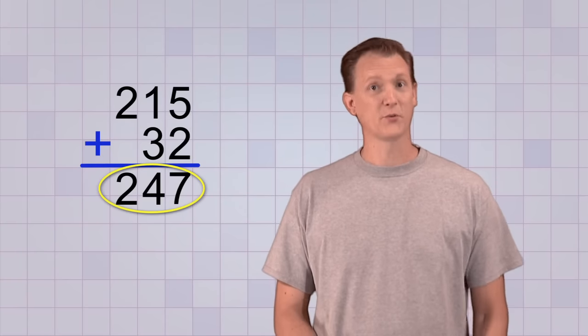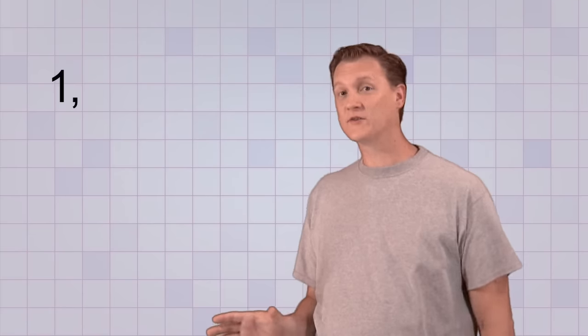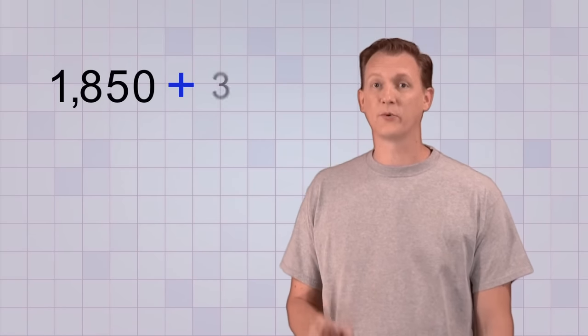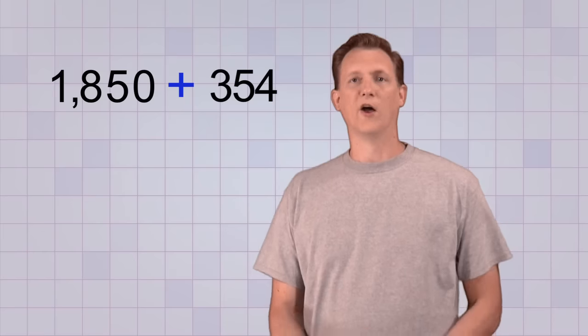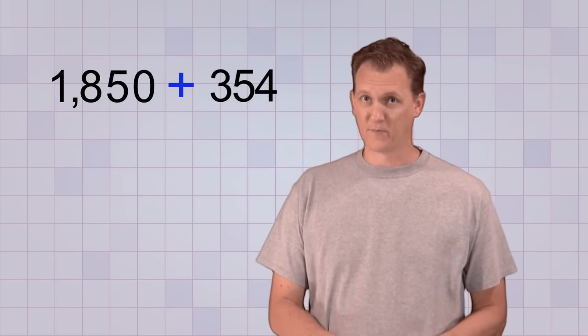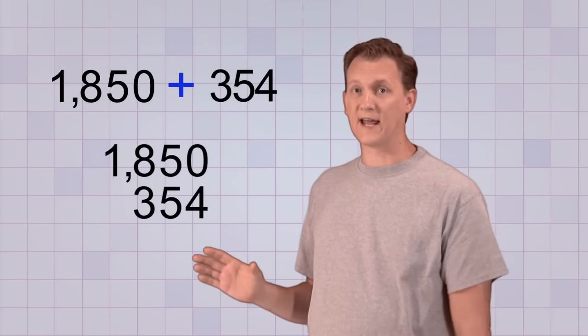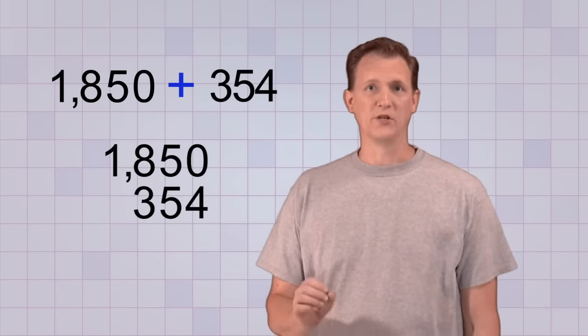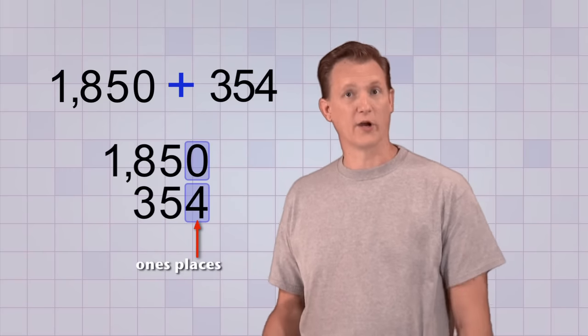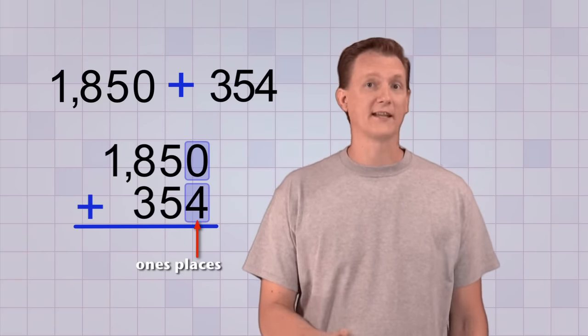Let's try another example. This one's a little harder. 1850 plus 354. Okay, the first step is the same. We need to stack the numbers up so we can add each number place column. Be sure to line up the ones places and draw your line and plus symbol just like in the last example.